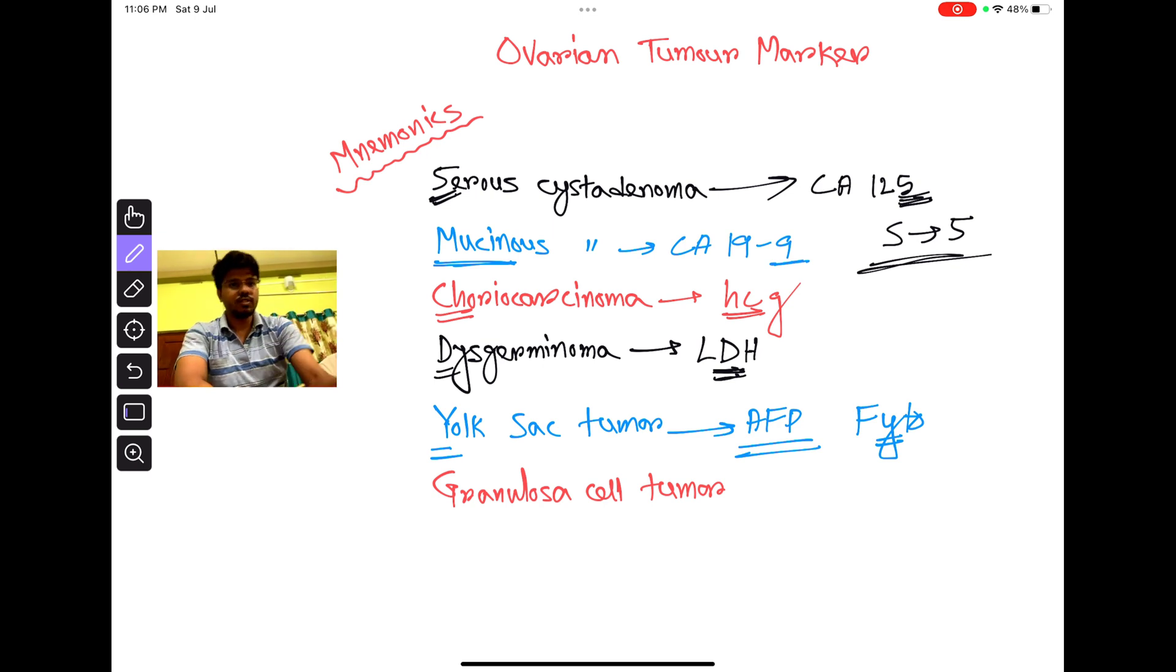Now granulosa cell tumor. Granulosa cell secretes which hormone? Inhibin B. So marker is obviously inhibin B. Point to be noted: granulosa cell tumor is similar to Sertoli cell tumor in male.